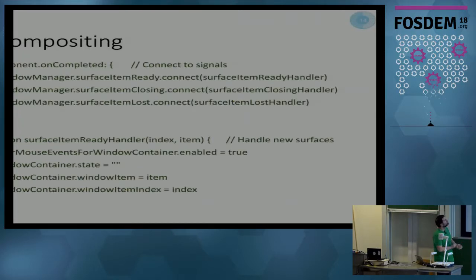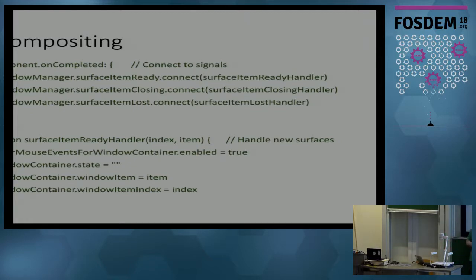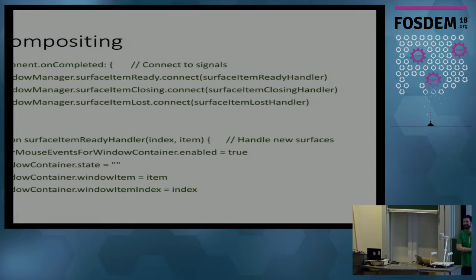Then we hook into some signals. We want to know when surface items appear, when they're closing, and when they're lost. When the application is started it will create a Wayland surface, which means it is ready after a while, and we have a handler for ready. In this super trivial full-screen window manager implementation, we pick it up in our container — we simply put the surface item inside that container, and it's composited onto the screen inside the QML scene that is your System UI. You can do shader code in QML as well and apply that inside your compositor on top of the window surfaces, so it's really powerful.